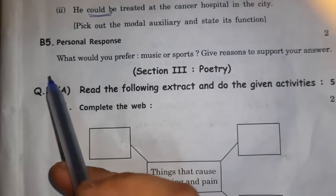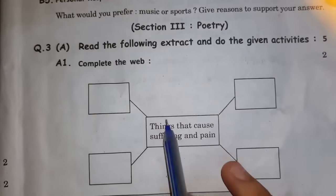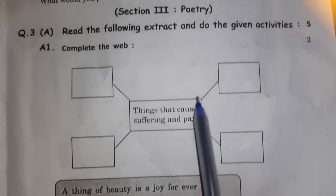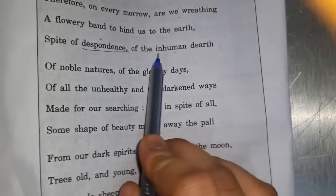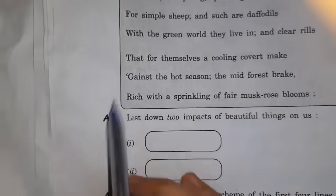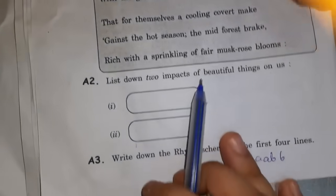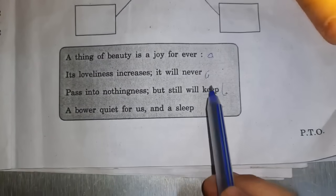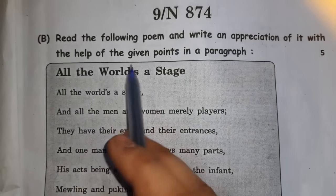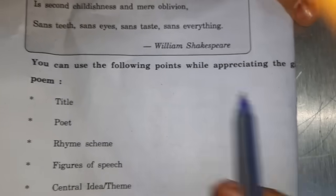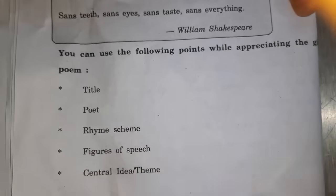Personal response: what would you prefer — music or sports? Next: poetry. 'A thing of beauty is a joy forever.' Things that cause suffering and pain — inhuman death — these are all things that you have to write. List down two impacts of beautiful things on us. Write down the rhyme scheme of the first four lines: 'ever/never' — A-A, 'keeps' — B-B. So the rhyme scheme is AABB. Next: appreciation — 5 marks. 'All the World's a Stage' by William Shakespeare — title, poet, rhyme scheme, figure of speech, central idea/theme.